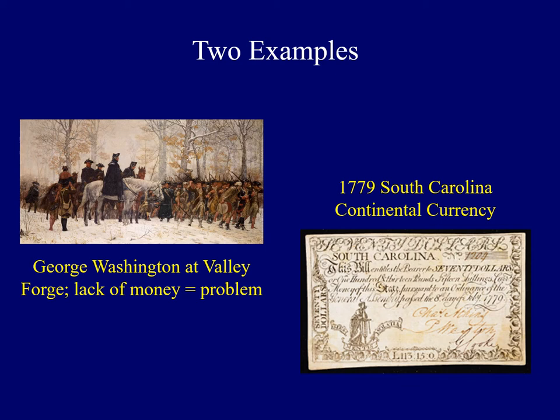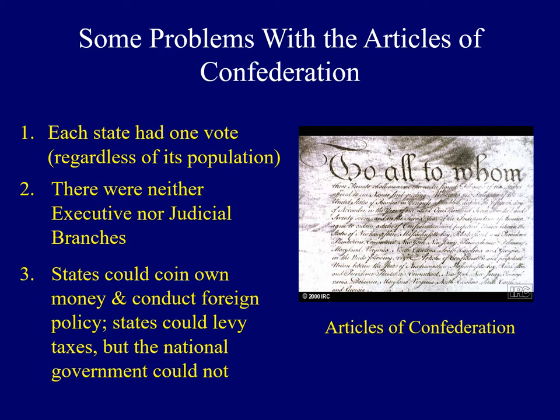I don't know anyone who likes to pay taxes, but our tax dollars go toward a range of things. We see an image of George Washington at Valley Forge — during the Revolutionary War, one of the problems he continually faced was a lack of funding for uniforms, boots, and things like that for his soldiers. On the right, we see currency from the state of South Carolina. In the United States under the Articles, there were multiple currencies — South Carolina, New York, Pennsylvania — each state had its own currency, which created chaos for business owners. Taken collectively, these problems prompted some to want to modify the Articles or maybe even start from scratch.